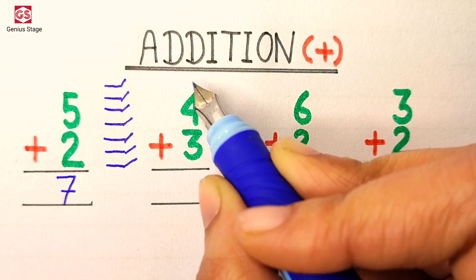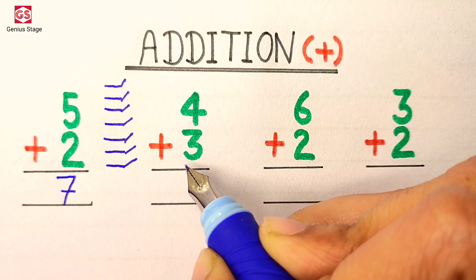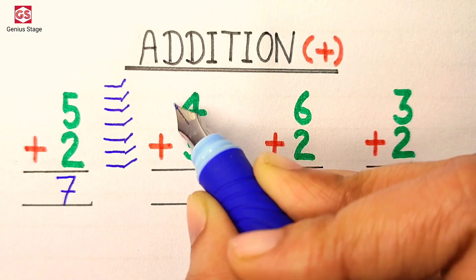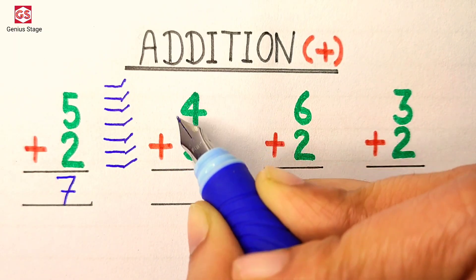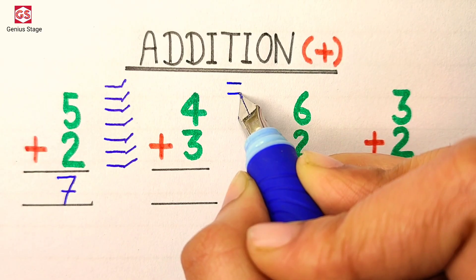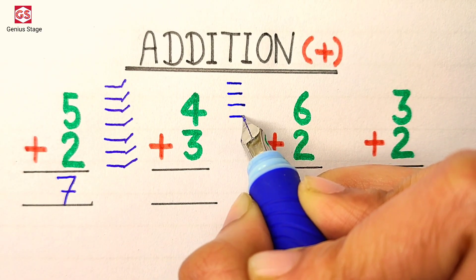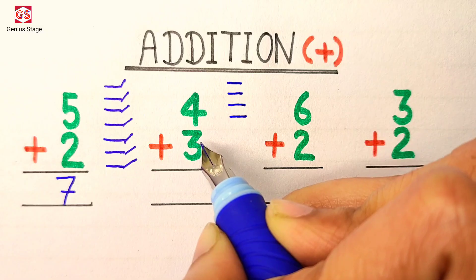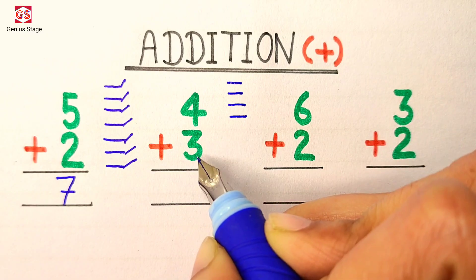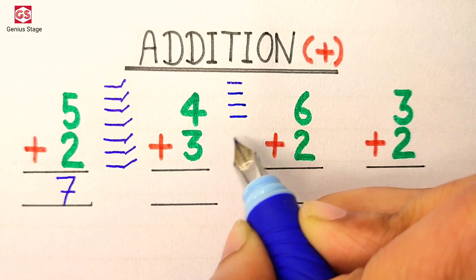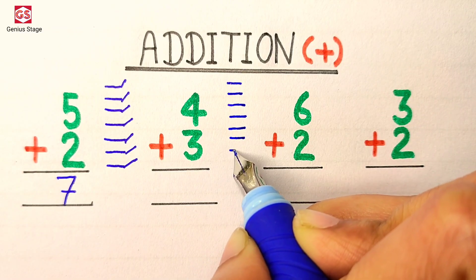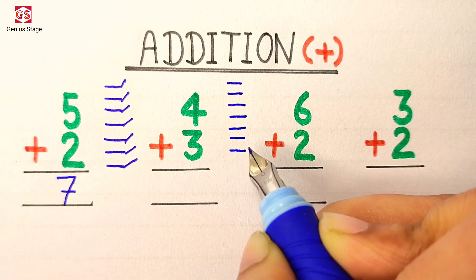In the second question, we need to add 4 to 3. So first we will draw 4 lines: 1, 2, 3, 4. Below the 4 it says 3, so we will draw 3 more lines: 1, 2, 3.